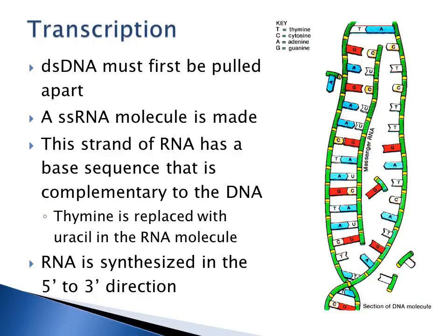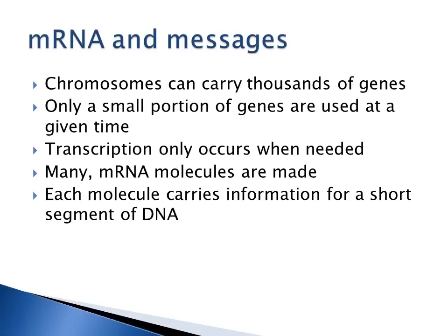RNA is synthesized in the five prime to three prime direction, just like DNA is synthesized in replication. Keep in mind that chromosomes carry thousands of genes, and only a certain portion of genes are used at any one time. Transcription of a set of genes is only going to occur when it's needed. Only messenger RNA transcription is going to occur for that segment of DNA or for that gene when that gene is needed in the cell.